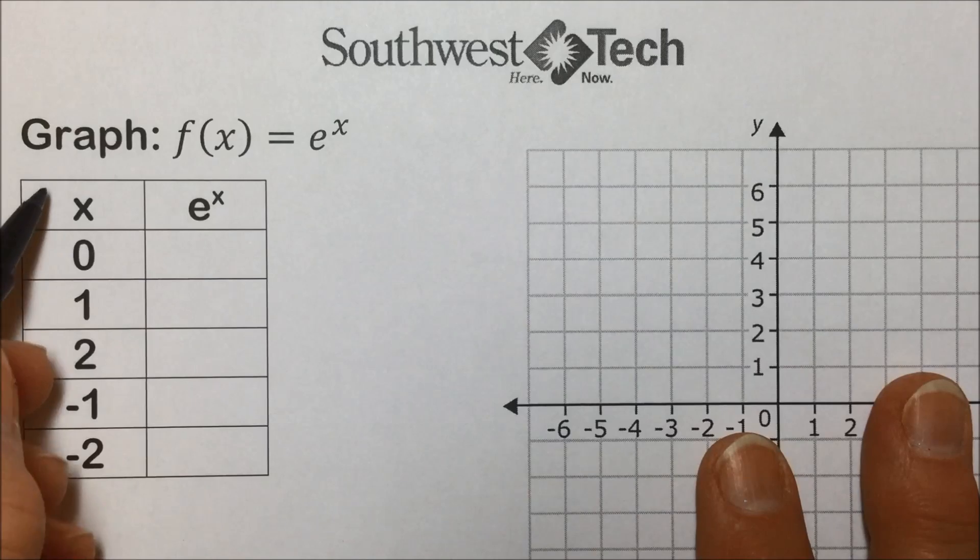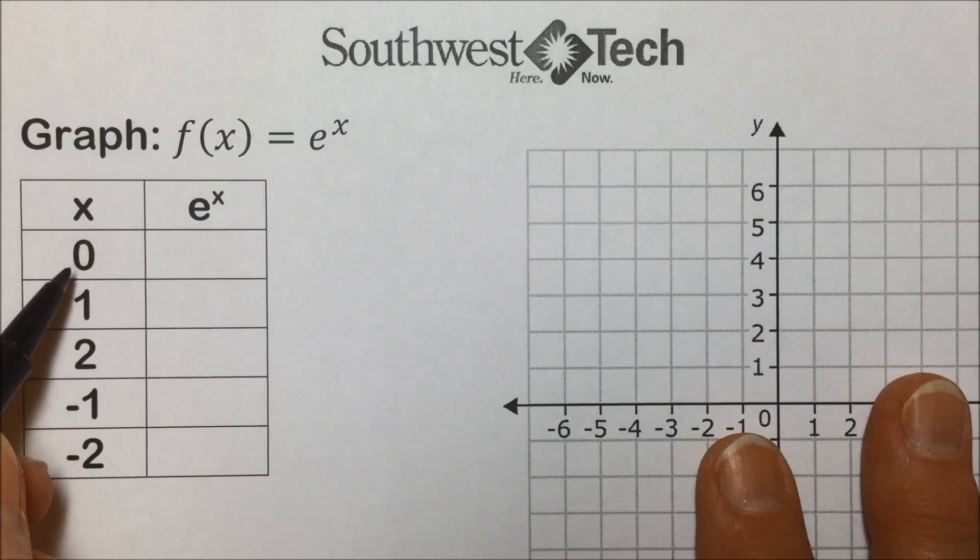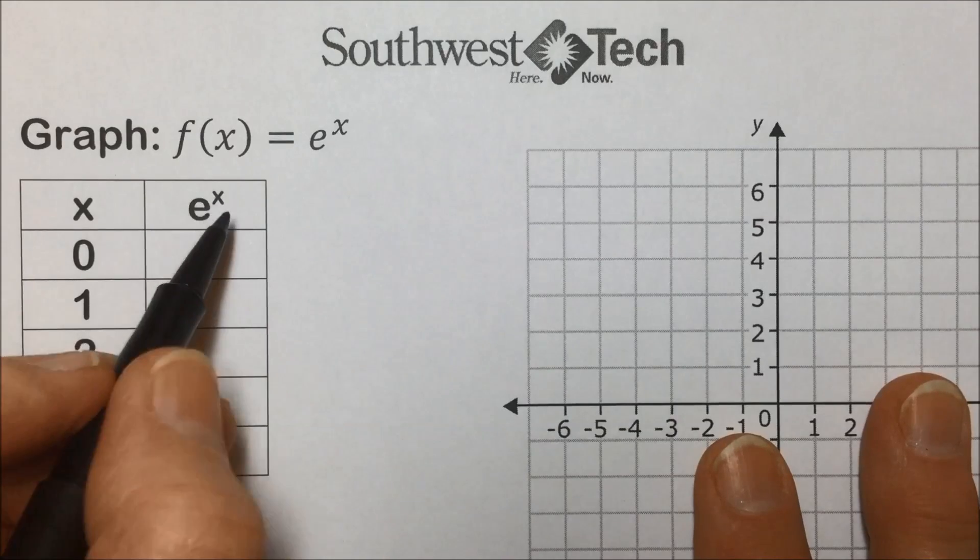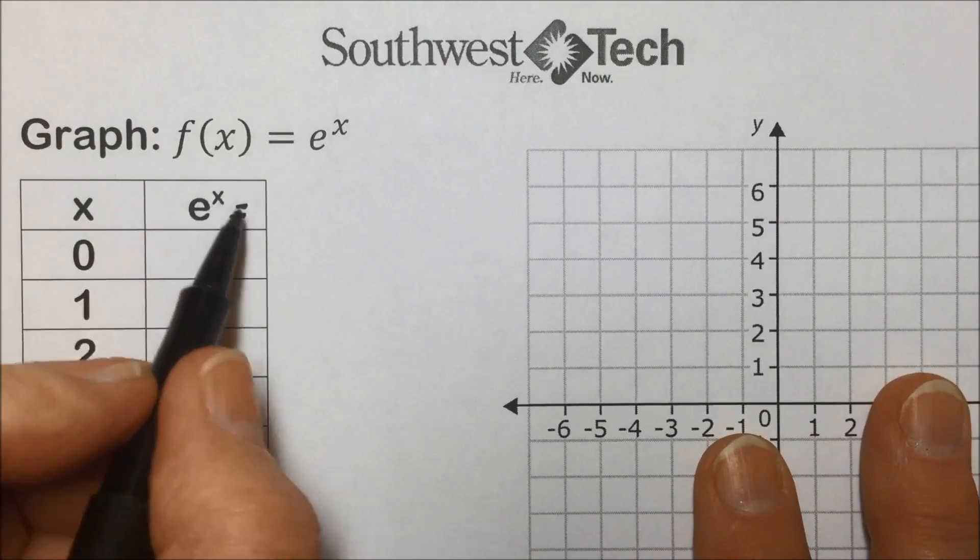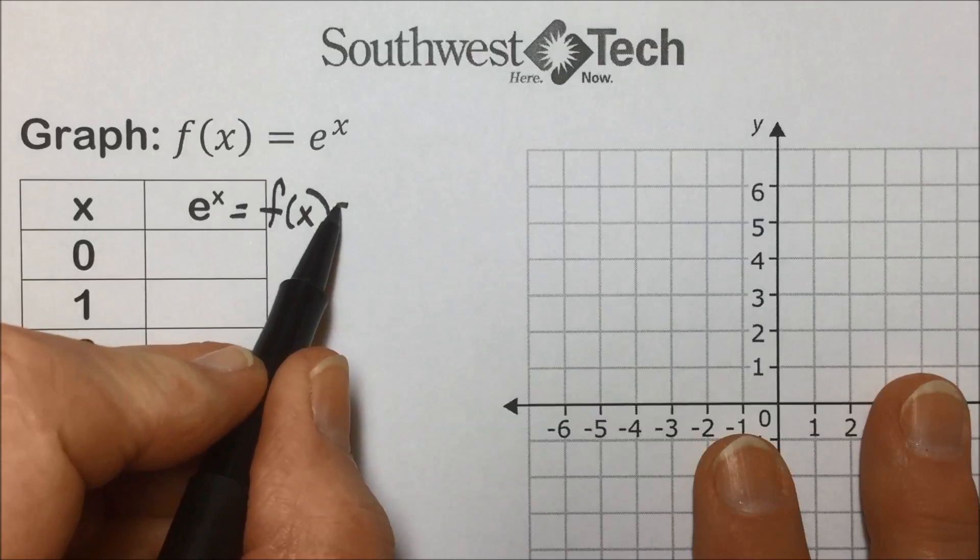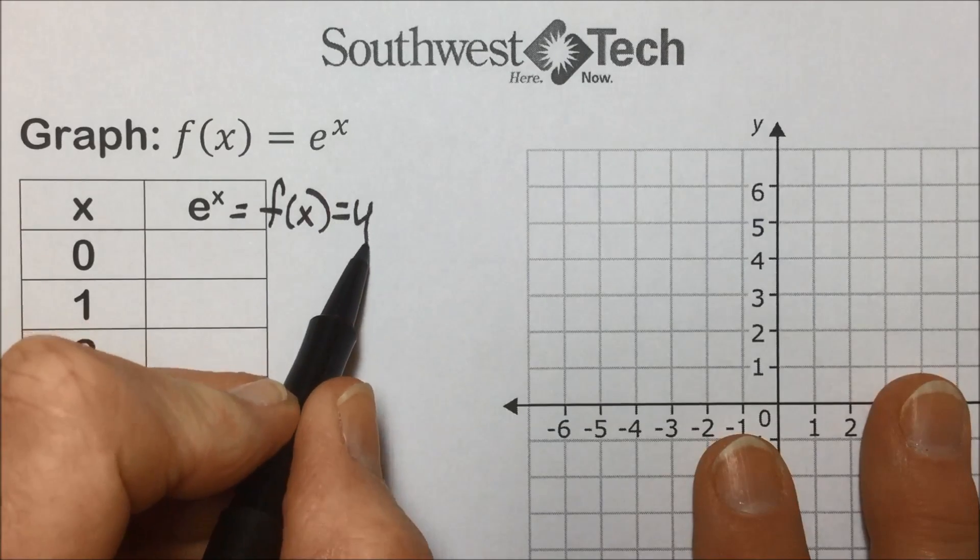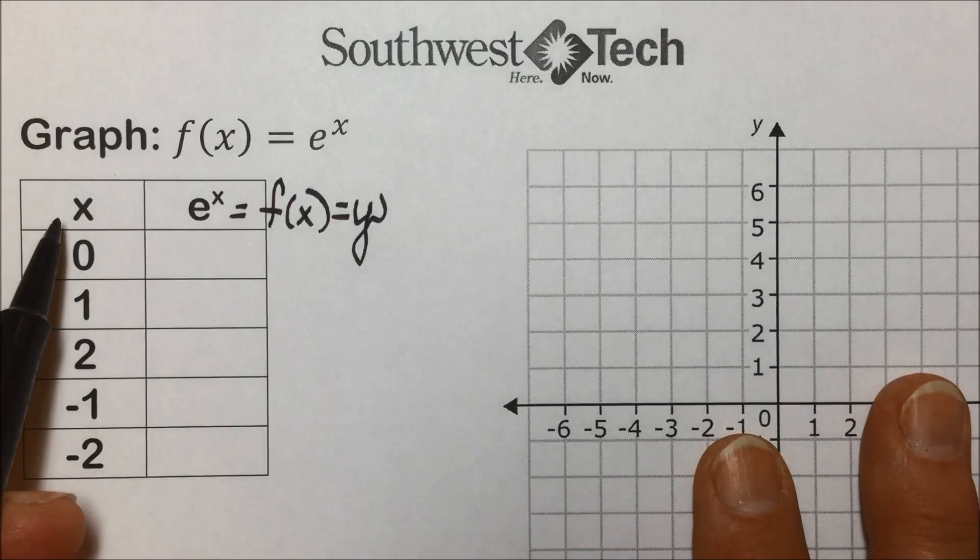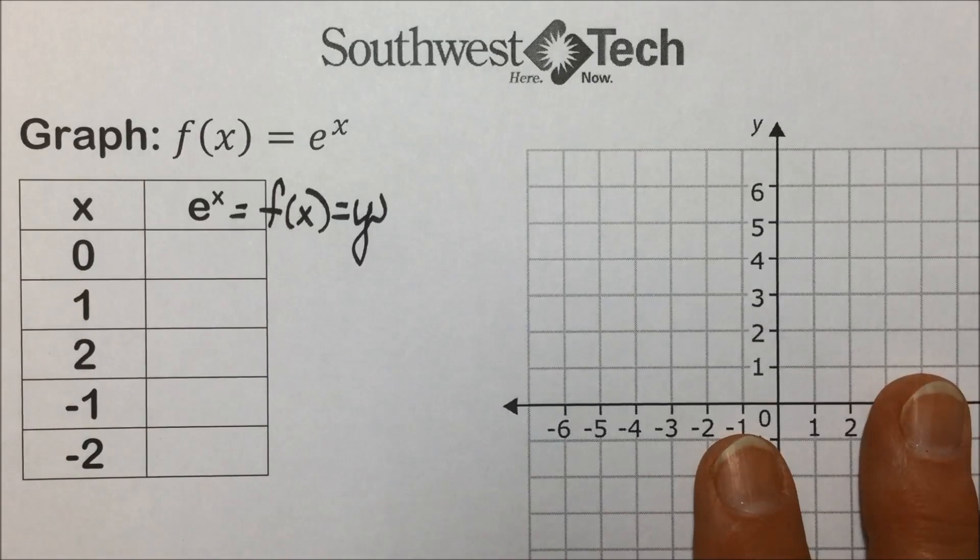So the first one, I have a table set up here with an x value of 0 that will plug in the function, which e to the x is the function that's given, and function notation can be replaced with y, so we're setting up ordered pairs that we'll graph then to get a sense of what this looks like.